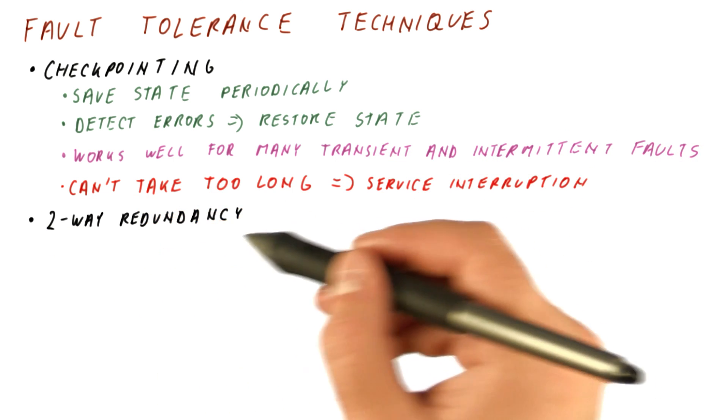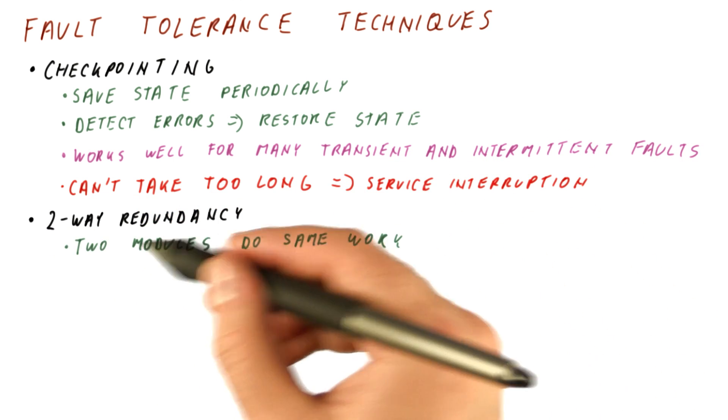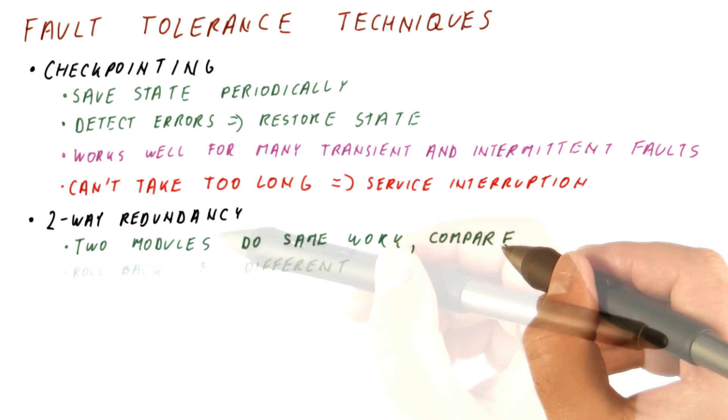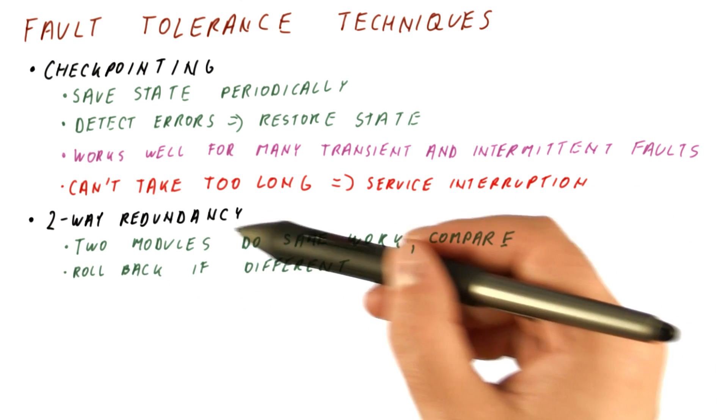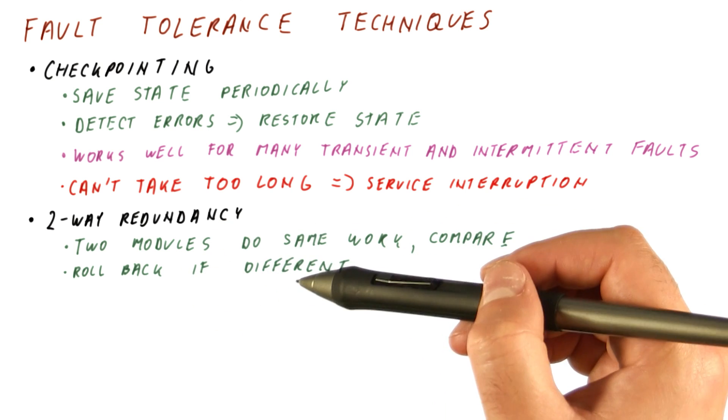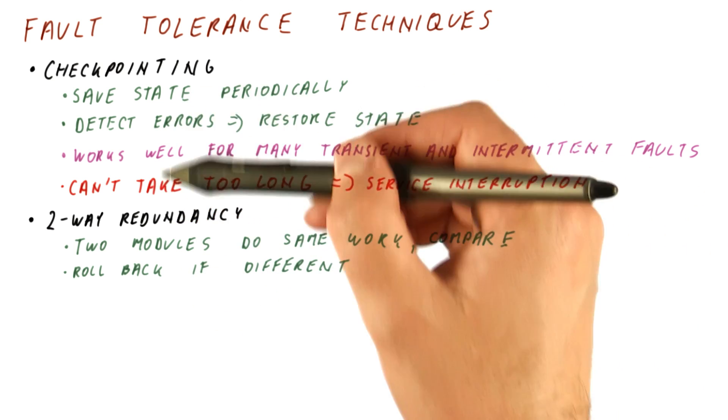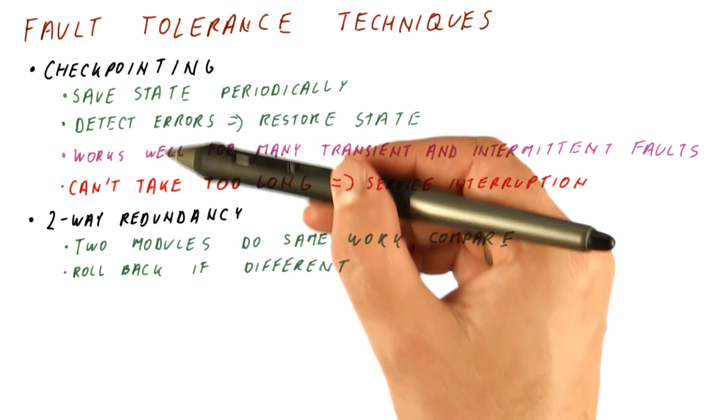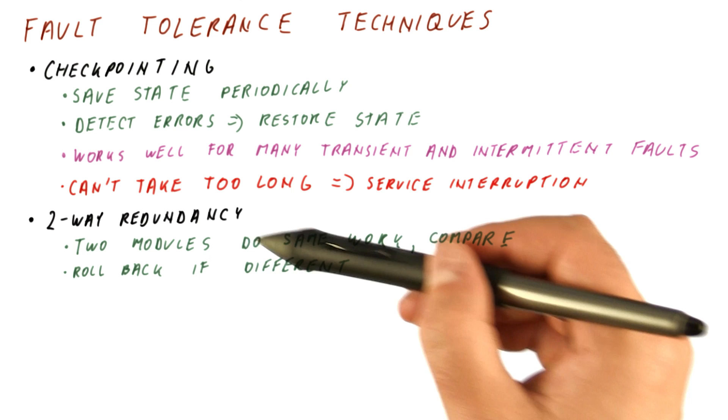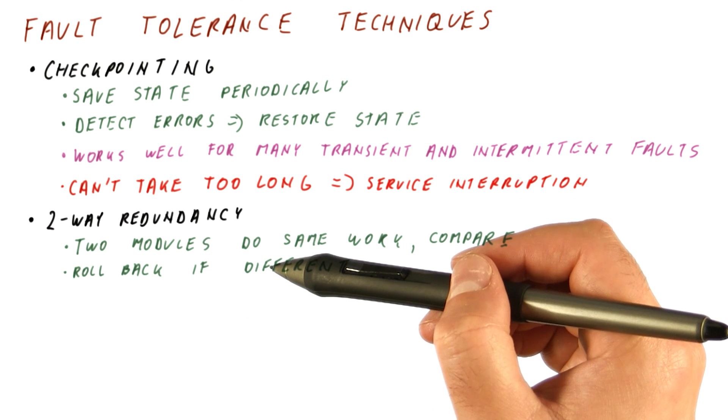We can use two-way redundancy where two modules do the same work. We compare their results and roll back if the results are different. This is an error detection technique that needs a recovery technique such as checkpointing. Similarly, checkpointing is a recovery technique that needs something like two-way redundancy to detect errors.